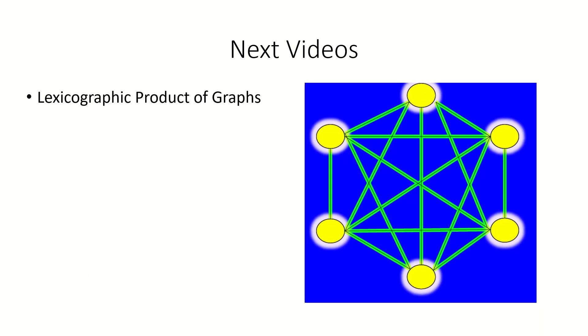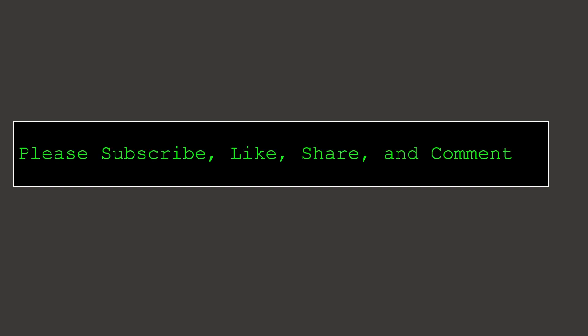That's it for this video. In my next video, we'll take a look at the lexicographic product of graphs, one of the big four graph products, so stay tuned. I've left some links in the comments for more information on Eulerian circuits and trails, including a very nice interactive exploration. Thanks for watching — please subscribe, like, share, and comment if you liked the video. Have a great day.